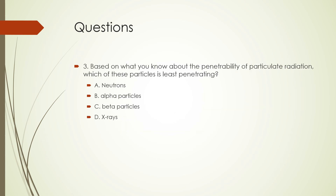Next question: based on what you know about the penetrability of particulate radiation, which of these particles is least penetrating? A: neutrons. B: alpha particles. C: beta particles. D: x-rays. The correct answer is B, alpha particles. This is the last slide and the end of the presentation. Thank you for watching.